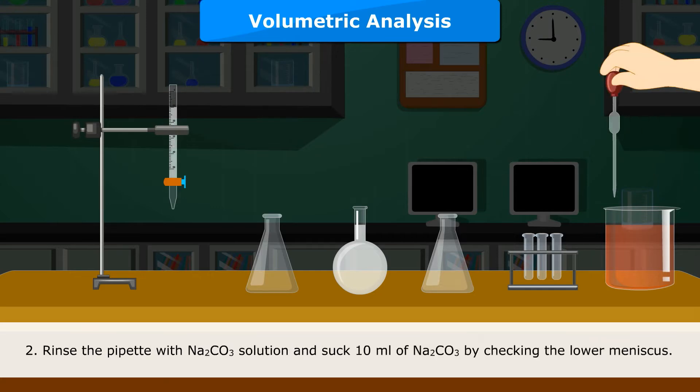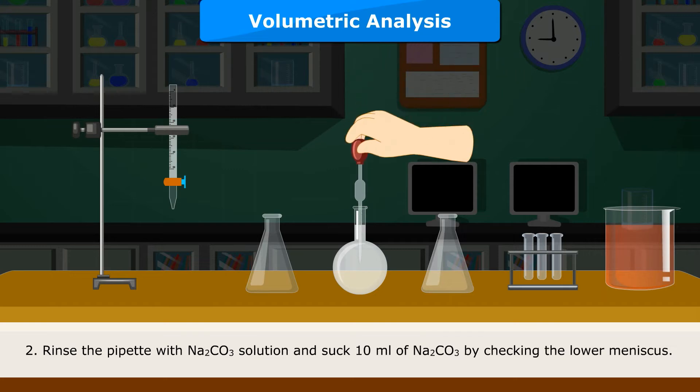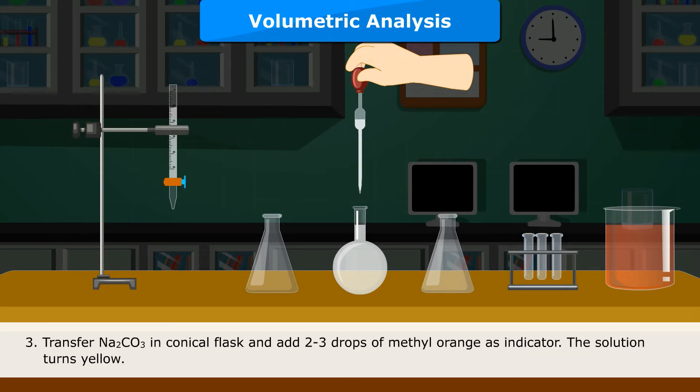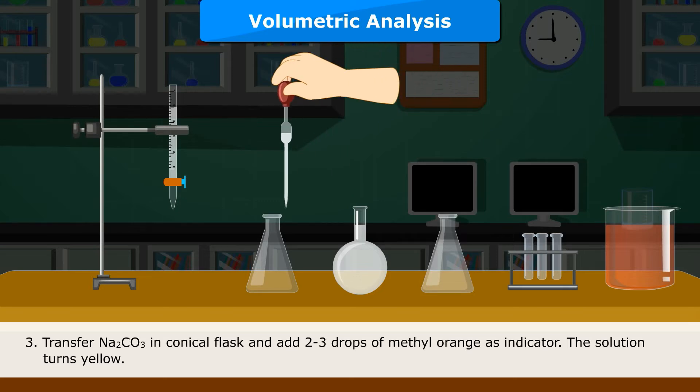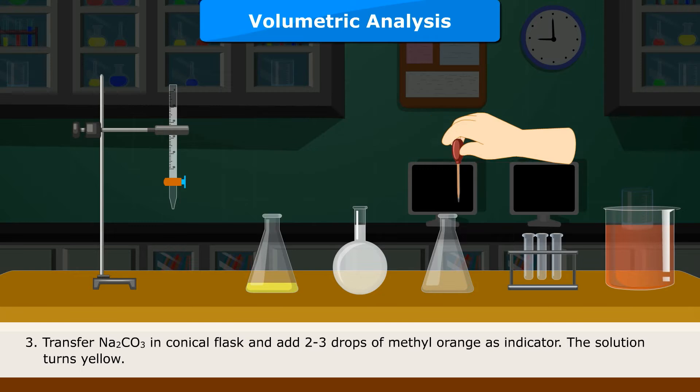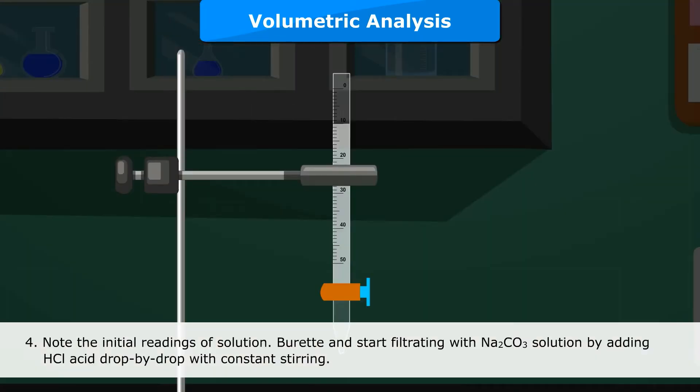Rinse the pipet with Na2CO3 solution and suck 10 ml of Na2CO3 by checking the lower meniscus. Transfer Na2CO3 in conical flask and add 2 to 3 drops of Methyl Orange as Indicator. The solution turns yellow. Note the initial